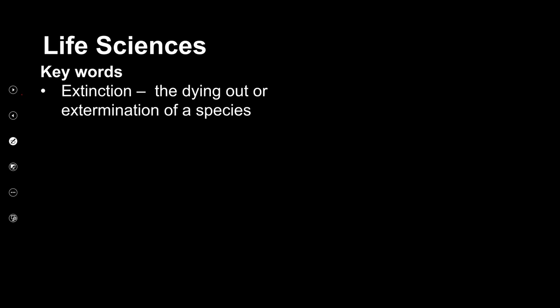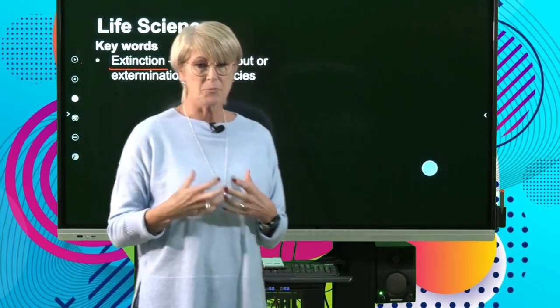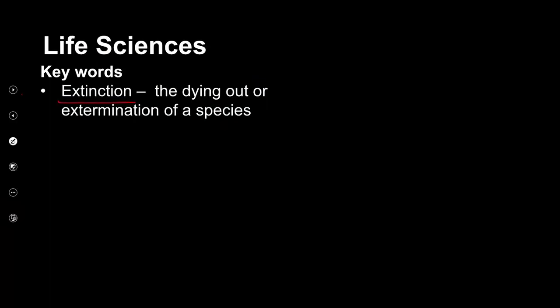The next term we're going to look at is extinction, and it's a very important concept to know. This is where organisms that have existed on Earth die out. Once they've died out, they are no longer present on Earth. We know about mass extinctions — and a good example of an extinct group of organisms are the dinosaurs. They have become extinct.